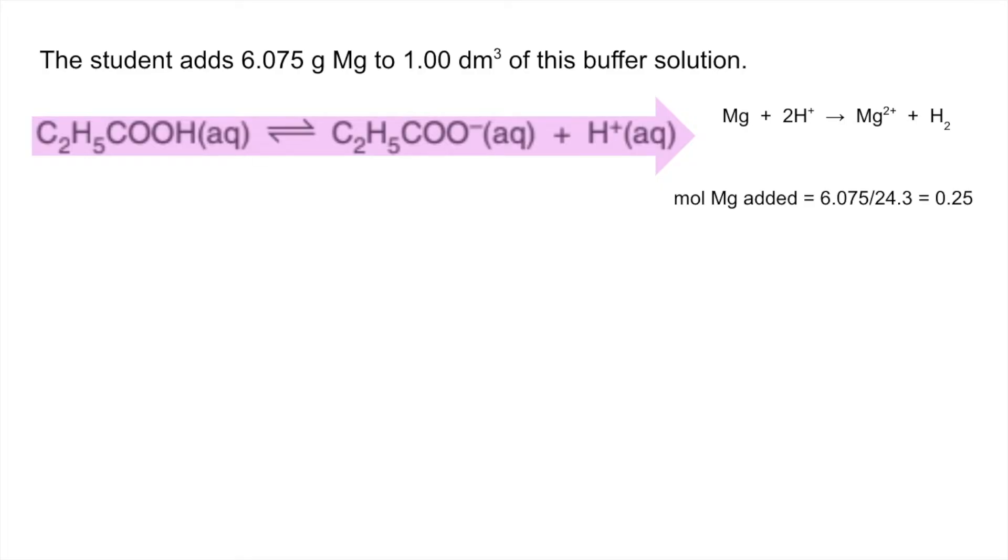0.25 moles of magnesium from mass over MR. So twice as many moles of H+ are going to be removed. If we look at the initial moles of the acid and salt, they were both at 1. The final moles of the acid will go down by 0.5 because it has to replace these 0.5 moles of H+ that have been lost. It's going to go down to 0.5 moles, whereas the salt is going to go up to 1.5 moles.